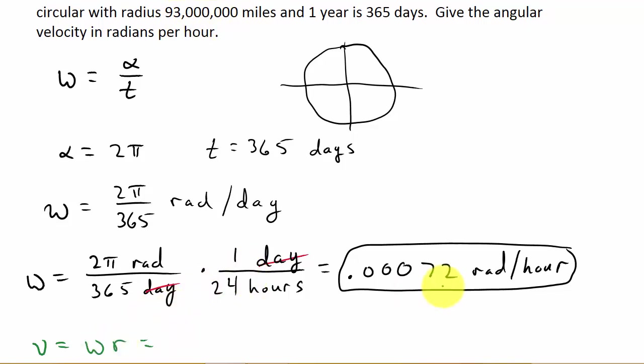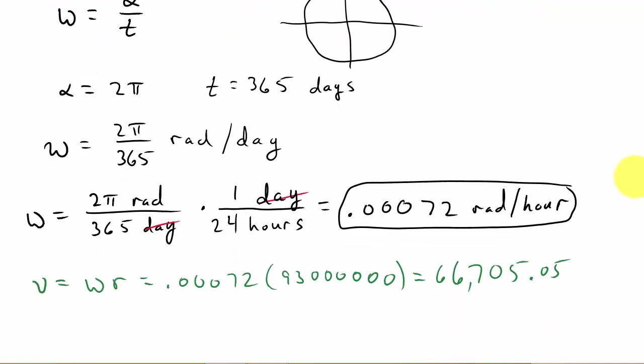So the linear velocity would be the angular velocity times the radius, which is 93 million. And when we punch that in our calculator, we get about 66705.05.